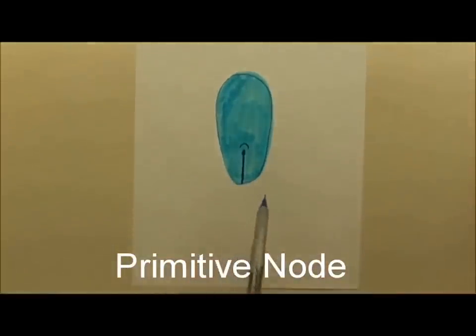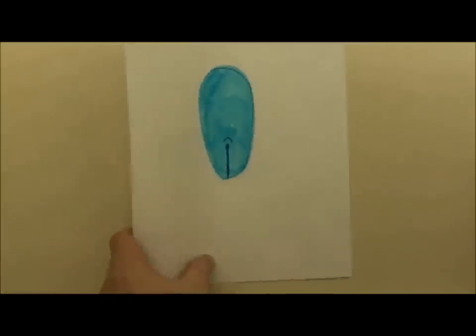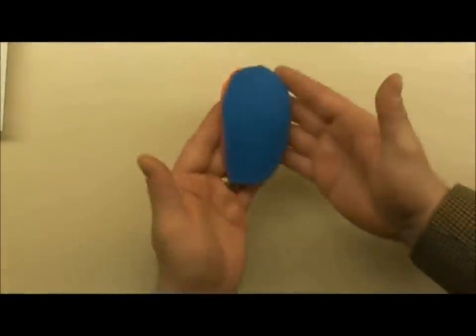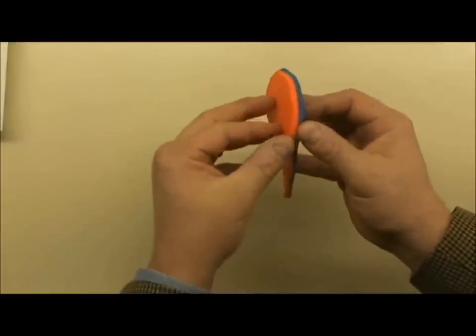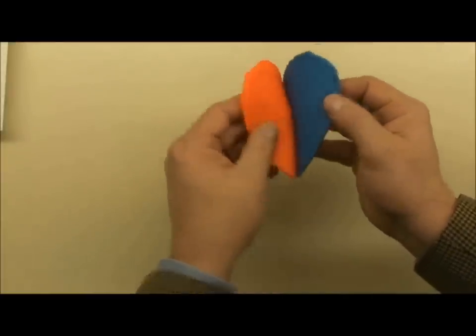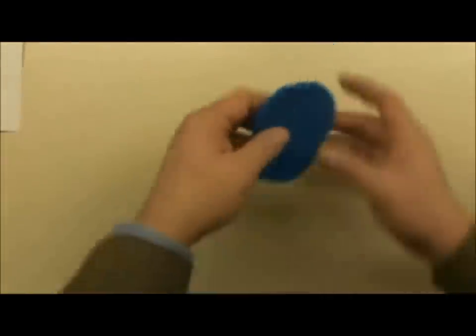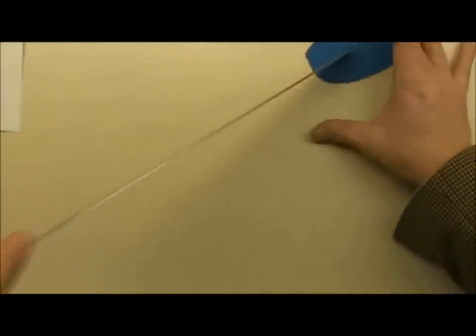This is the place where gastrulation happens and it's very difficult to visualize this in two dimensions. So what we're going to do, let's take a little bit of play-doh here. We have the epiblast disc above, hypoblast disc below. But since that hypoblast doesn't really contribute to the mature embryo, we're going to peel that away for the moment and make a primitive streak right there.